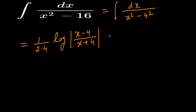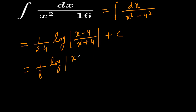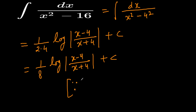Here a is 4, plus c. So this can be written as 1 over 8 log of x minus 4 divided by x plus 4, plus c. We should write the formula we used: integration of dx divided by x squared minus a squared.